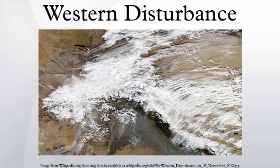During winter, there is an inflow of low pressure depressions called western disturbances in northwest India. These westerly depressions originate in the Mediterranean and enter India after crossing Pakistan, Iran, Iraq, and Afghanistan, intensifying over northwest India and moving eastwards, causing rain in Punjab and Haryana and snowfall in the Himalayan belt.